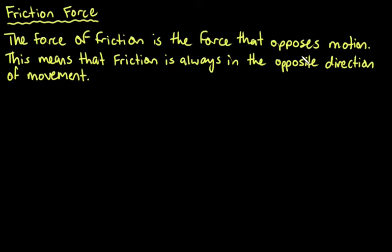The force of friction is a force that opposes motion. This means that when we're looking at a diagram, friction is going to be the arrow that is always pointing in the opposite direction of the movement.